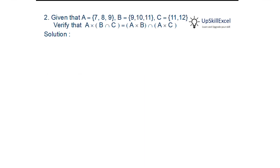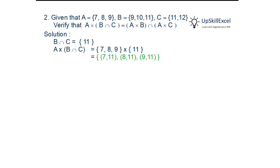Given 3 sets A, B and C, verify the identity. Starting with the left-hand side, we have the product of A and (B∩C). First we find B∩C, which gives just 1 element: 11. Then we take the product with A. As A has 3 elements and B∩C has 1 element, the product will have 3 ordered pairs.